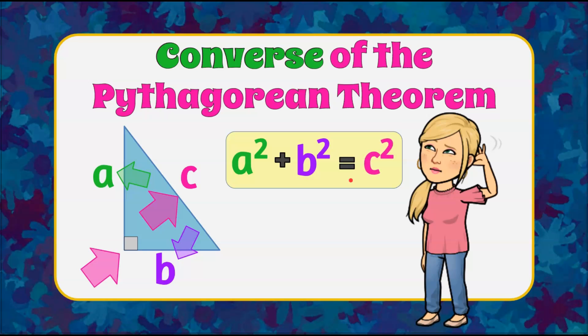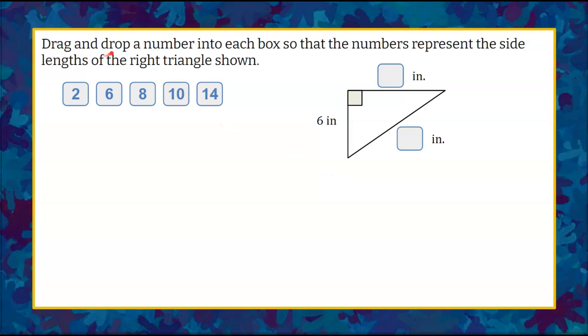Let's practice. We have this problem that says to drag and drop a number into each box so that the numbers represent the side lengths of the right triangle shown. So we have this right triangle shown, and we need to use these five values to identify these two missing side lengths.